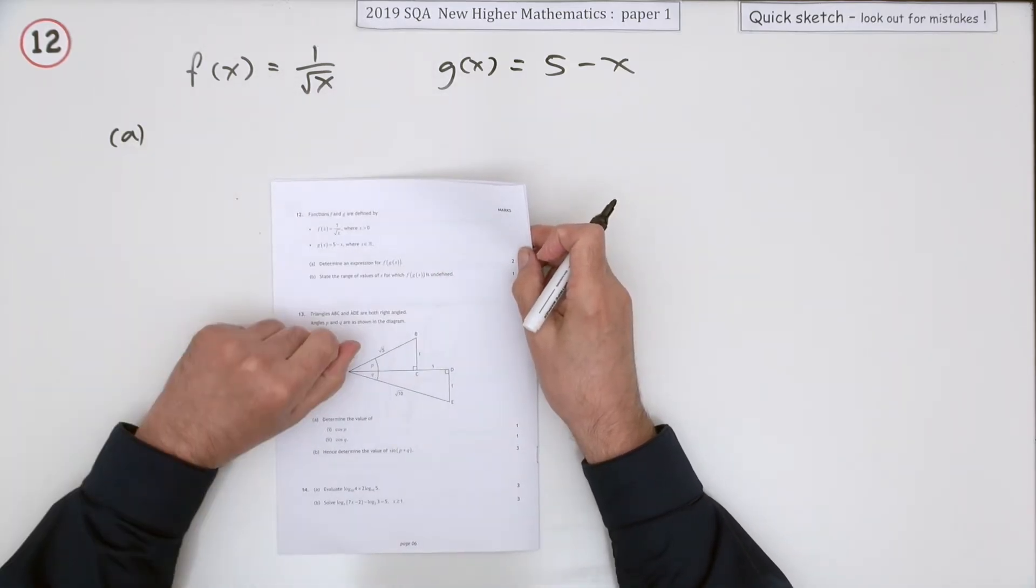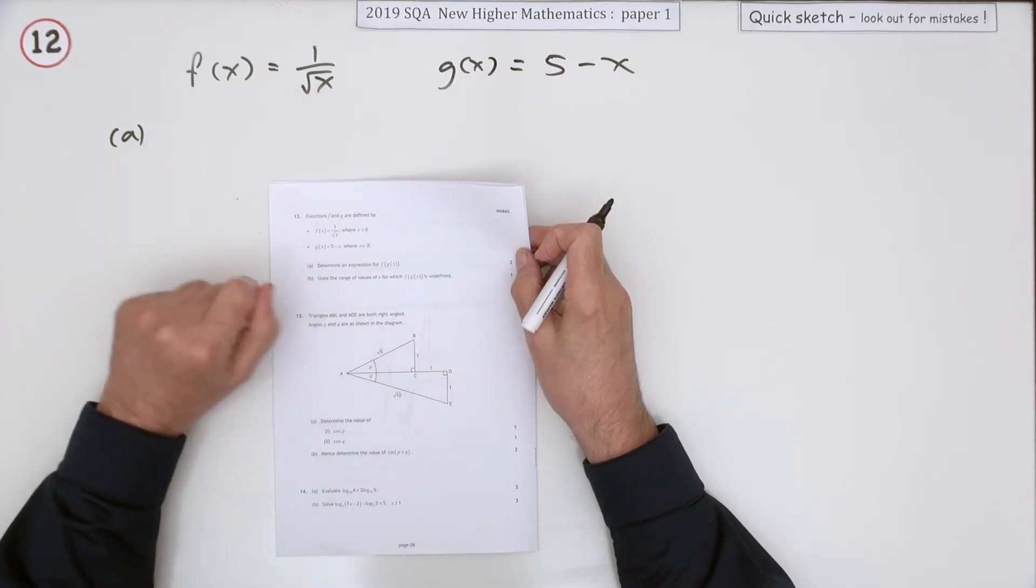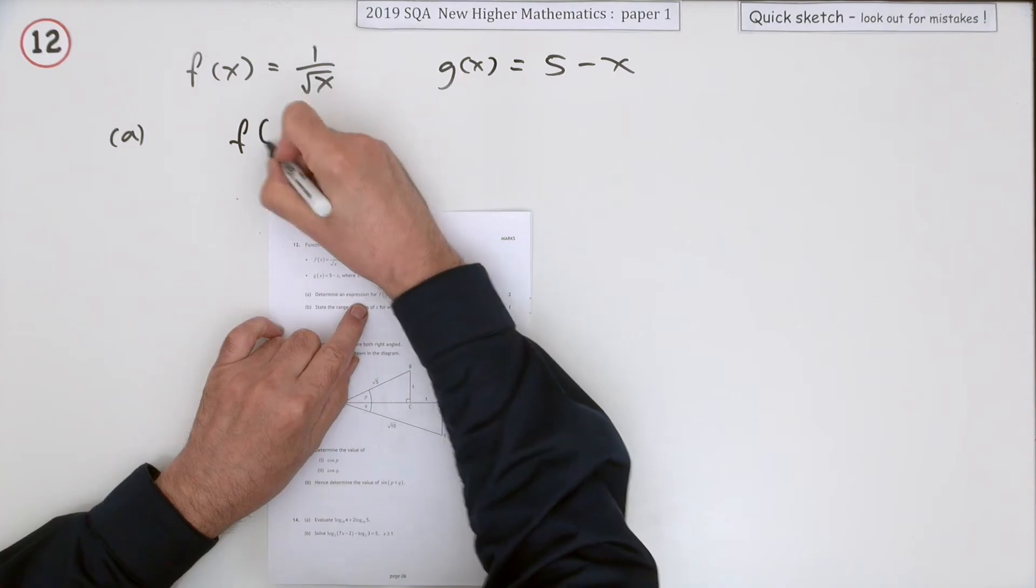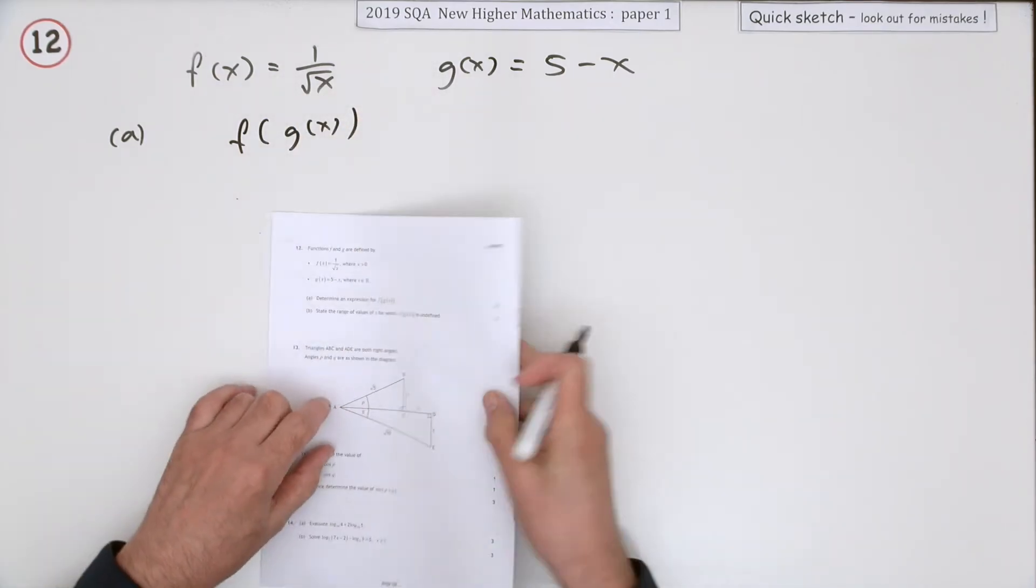You're given these two functions here: f(x) = 1 over root x, and g(x) = 5 minus x. Watch out for these square roots. Find an expression for f of g of x.